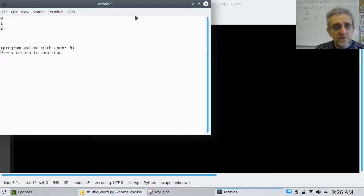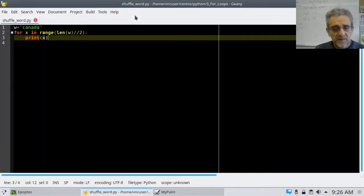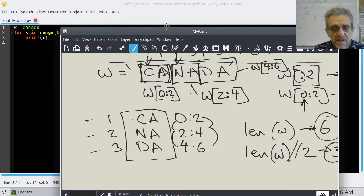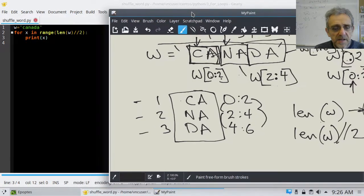And that's all I want for now. I'm actually going to run this program and it's going to ask me to save it. And I'm going to call it, let's put it into for loops. Let's move this out of the way so I can see a little bit of what I'm doing here. So, let's put it in here and let's call it shuffle. Shuffle word. So, when I run it, it gives me zero, one, two.